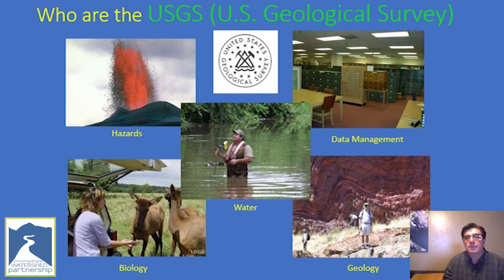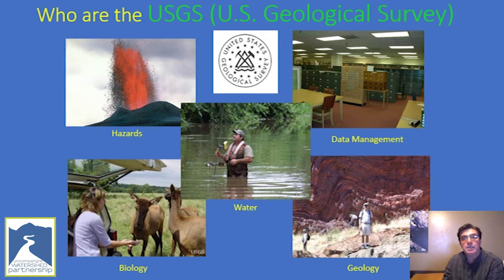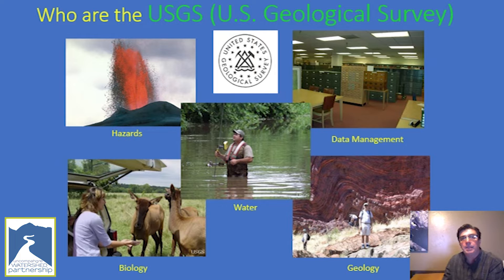The USGS collaborates with many other federal, state, and local agencies as well as non-profits and stakeholder groups throughout the nation. In Colorado, we regularly work with water quantity and quality issues throughout the state. In Western Colorado, the USGS maintains hundreds of stream flow and water quality monitoring stations annually. These stations include many in the Lower Gunnison and Uncompahgre Valley, and they are used to determine water availability and suitability for multiple uses.